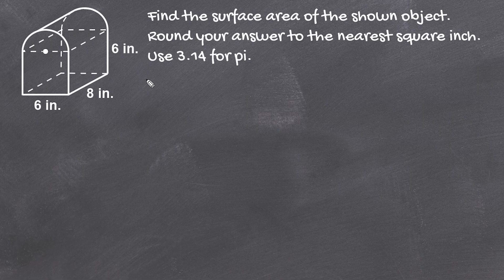What we're going to do first is calculate the surface area of the rectangular prism, but we should note that only five of the six surfaces are actually exposed. This top surface is covered up by the half cylinder, so we can only include five of those surfaces in our calculation.